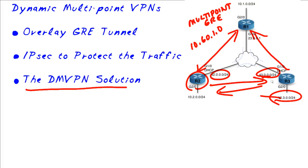And that, my friends, is the high-level overview of how Dynamic Multipoint VPNs work. The beauty is that remote devices don't have to have a static IP address. We could have 20, 30, or 40 branch offices all pop up, report into the hub, and dynamically build tunnels between each of the branch offices — all through the beauty of Dynamic Multipoint VPNs. I hope this has been informative for you, and I'd like to thank you for viewing.